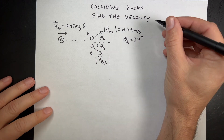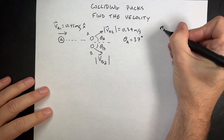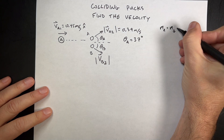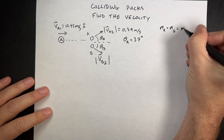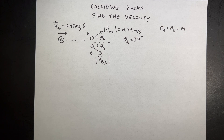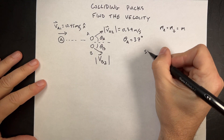The mass MA is equal to MB — we'll just call that M. They're the same mass. This is a conservation of momentum problem.